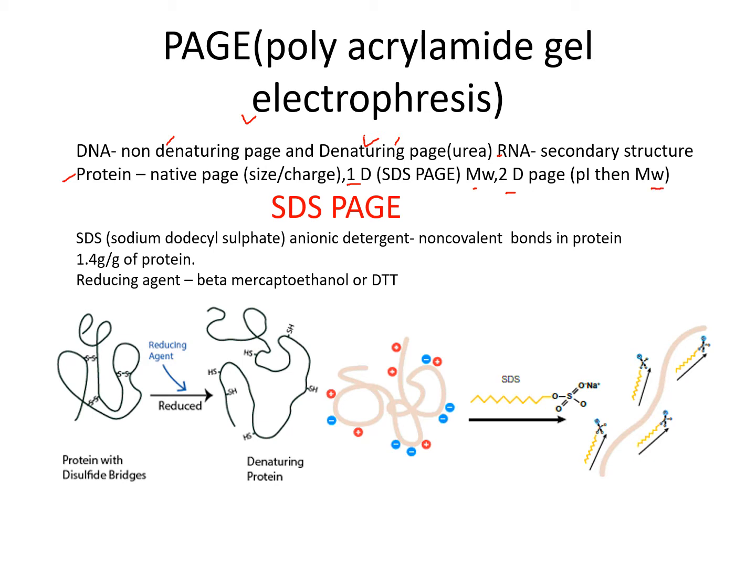What the isoelectric point of proteins is and how to calculate it I have already explained in my previous lecture, and its link is given in the description box. Now, coming to the topic: SDS-PAGE, that is sodium dodecyl sulfate polyacrylamide gel electrophoresis. SDS is an anionic detergent and it breaks the non-covalent bonds between the proteins.